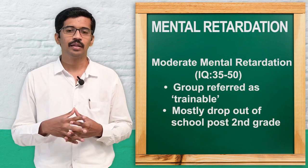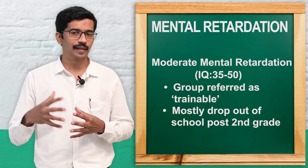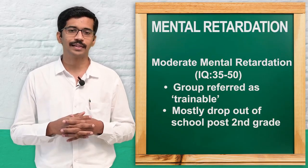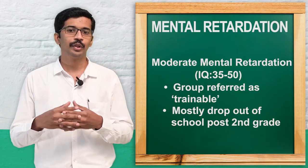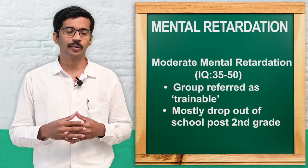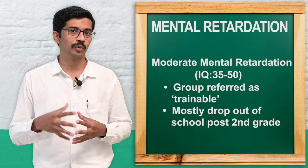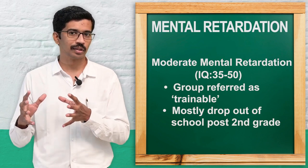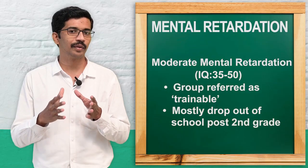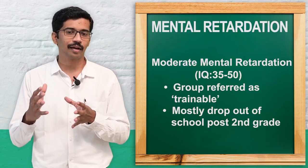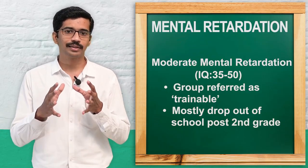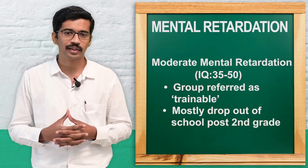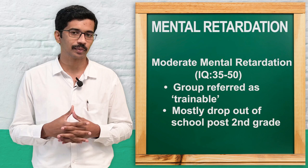Moderate mental retardation has an IQ ranging from 35 to 50. This group is termed the trainable group, because they cannot continue up to sixth grade — they will go up to second standard and then drop out. However, with supervision, they can be trained for some semi-skilled work.